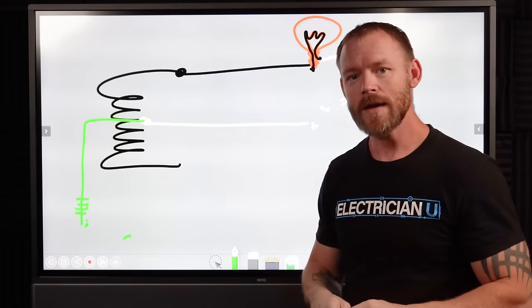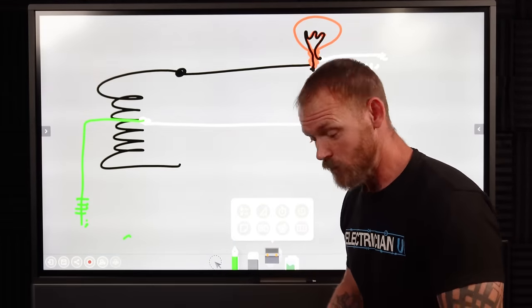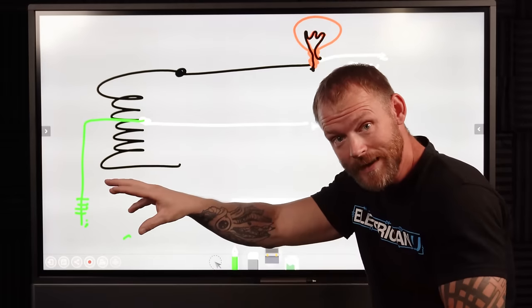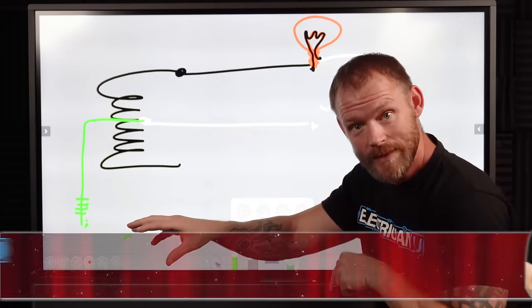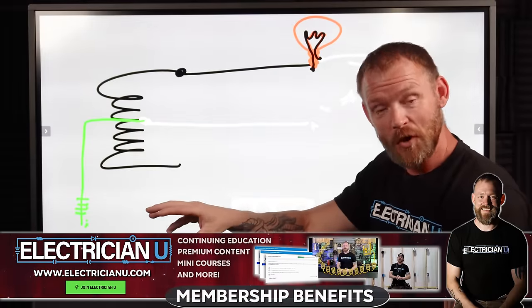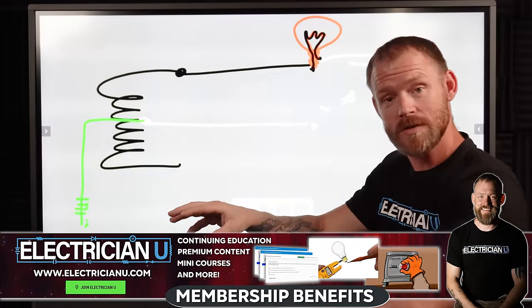But it's always, always, always between two points. So just always remember that. It can happen if you're kneeling on the ground and you're working on a light pole and you got your hand inside of a light pole. If your knee is wet, the earth is a conductor. If the earth is wet, especially if it's wet, you can introduce yourself to a circuit that way.